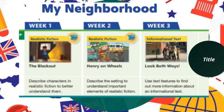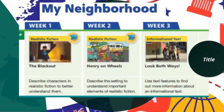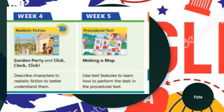In week three, it's an informational text, so we will learn about the graphic features and text features to find more information. In this story, you're going to learn about the importance of having rules in the street. In week four, we will learn about realistic fiction and read the stories Garden Party and Click Clack Click. We will describe characters in realistic fiction.